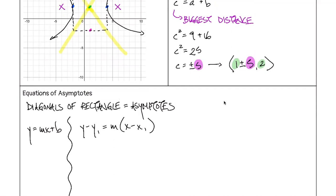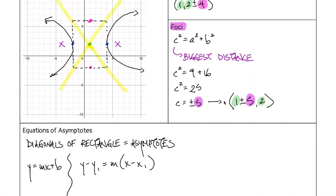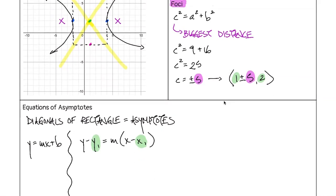All we need is any point on the line. What point is on both asymptote lines? The center point. So the center is our x₁ and y₁. We can already fill in y − 2 and x − 1 — it's like our h and k where we switch those signs. Now we need to find the slope.